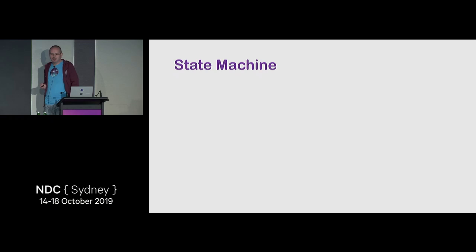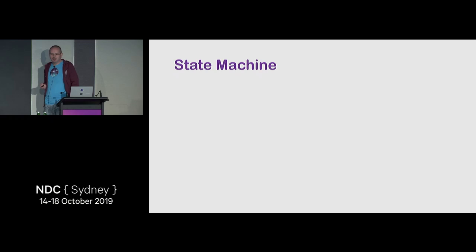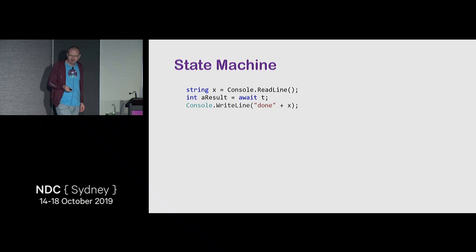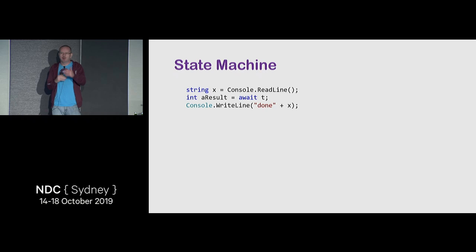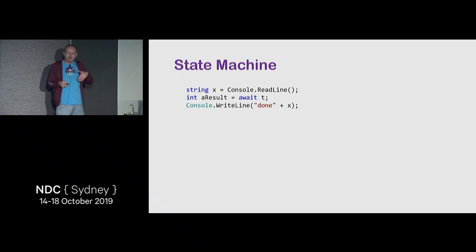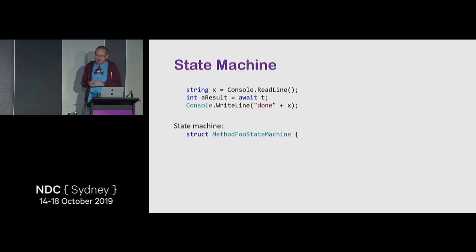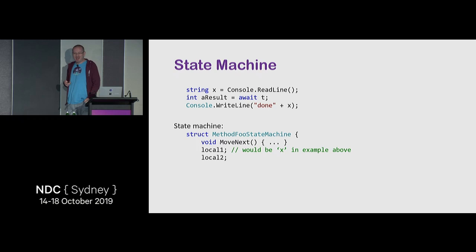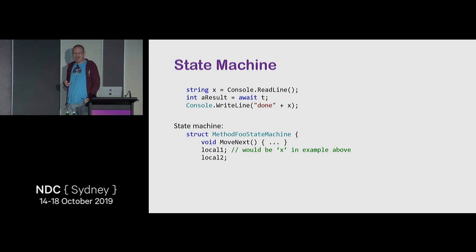Let's look deeper at how the state machine actually looks. Imagine a method that reads something from a user as X, then awaits something from network, then writes a line with X. The compiler generates a FooStateMachine struct with a MoveNext method, the locals — X will be captured as a field if it crosses the await boundary — the method parameters, the awaiter, and the state. This is similar to how lambdas do closures.